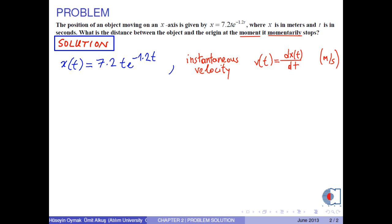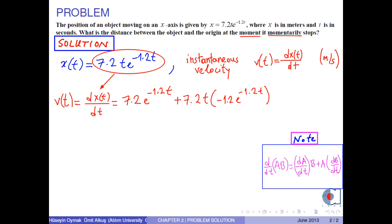So, we take the time derivative of x of t as follows: 7.2 times e to the power negative 1.2 t plus 7.2 times t times negative 1.2 times e to the power negative 1.2 t.